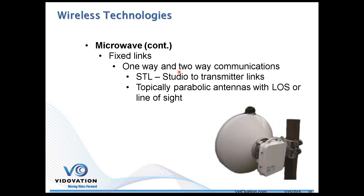These links can be one-way or two-way. A typical microwave application is STL — studio to transmitter link. These typically use parabolic high-gain antennas, like in the picture here, and they require line of sight, or LOS.